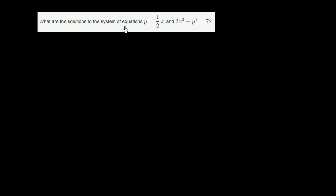What are the solutions to the system of equations, y is equal to 1 half x, and 2x squared minus y squared is equal to 7?